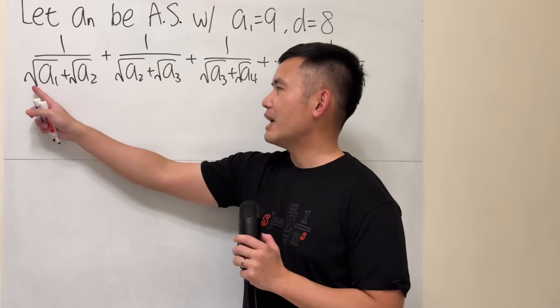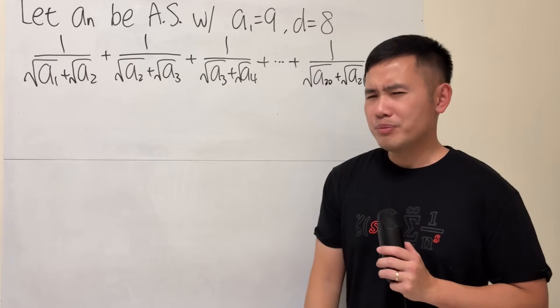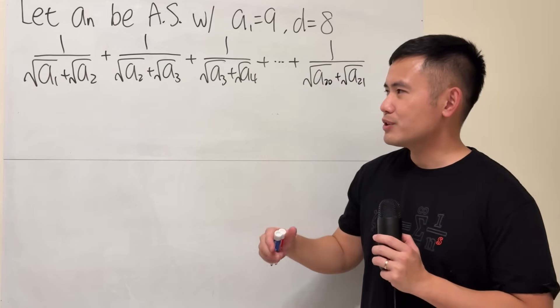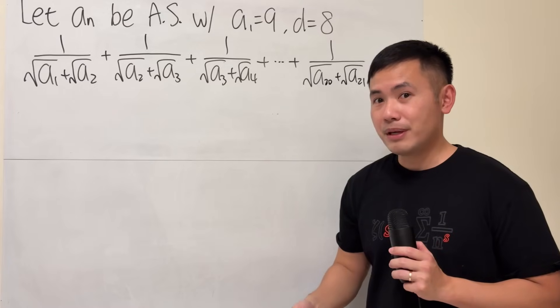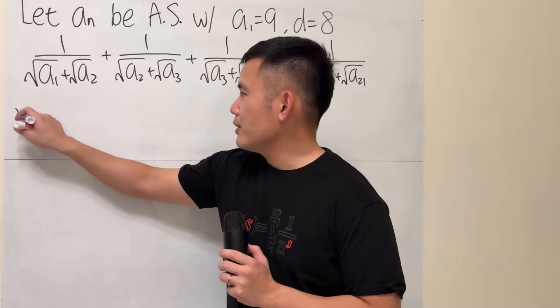First, we notice that we have square roots on the bottom, so maybe we can have a habit to just try to multiply the top and bottom by its conjugate and see what happens, right?